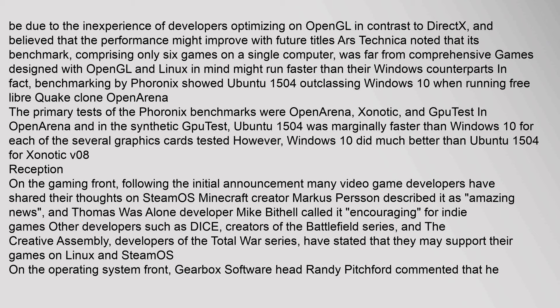Games designed with OpenGL and Linux in mind might run faster than their Windows counterparts. In fact, benchmarking by Phoronix showed Ubuntu 15.04 outclassing Windows 10 when running the free/libre Quake clone OpenArena. The primary tests of the Phoronix benchmarks were OpenArena, Xonotic, and GpuTest. In OpenArena and the synthetic GpuTest, Ubuntu 15.04 was marginally faster than Windows 10 for each of the several graphics cards tested. However, Windows 10 did much better than Ubuntu 15.04 for Xonotic.